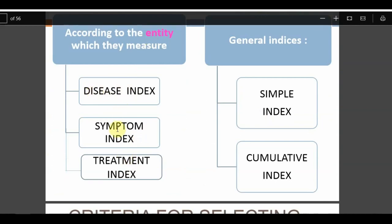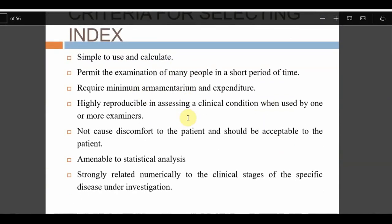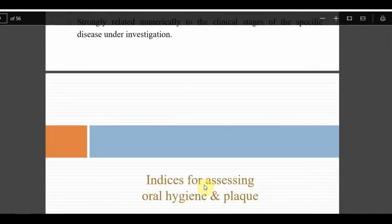A symptom index measures the presence or absence of symptoms, such as the gingival index or bleeding index. A treatment index measures treatment done, like the 'F' (filled) portion of the DMFT. Simple index measures one condition such as a gingival index; cumulative index records past conditions as well, such as the DMFT index where past caries experience is recorded. Criteria for a good index: it should be simple, permit examination of many people, require minimum armamentarium and expenditure, be highly reproducible, cause no discomfort, be amenable to statistical analysis, and have a strong relation to clinical stages.